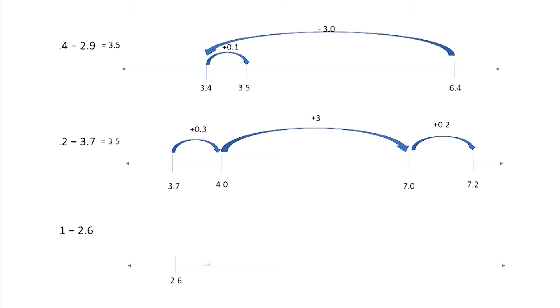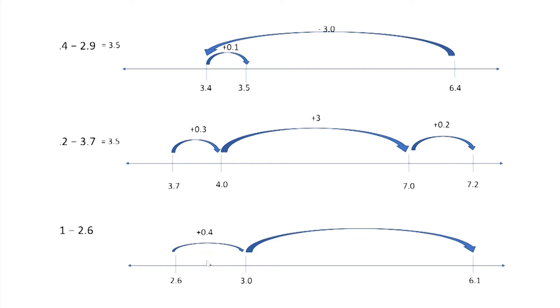I really liked that count up strategy to find the difference between. So I started at 2 and 6 tenths. What jump do you think I made? 4 tenths because that gets me to my nice whole number 3. And then, I can make a jump all the way to 6 and 1 tenth from there. How much more? 3 and 1 tenth. Good.